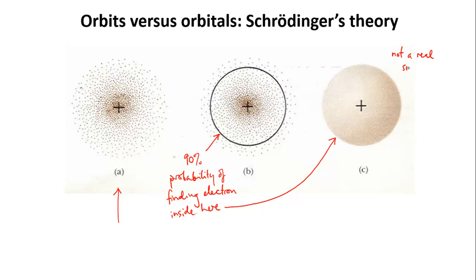The black circle could also be represented as a sphere, as on the right here, which encloses the region of 90% probability. Orbitals are often drawn with solid-looking surfaces like this because it's the easiest way to represent their shapes. But you must remember that there is no actual wall or surface. It's just a convenient way of indicating where the electron spends most of its time.